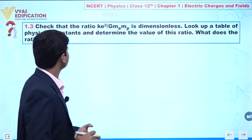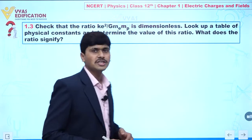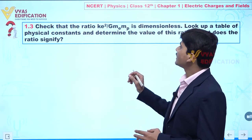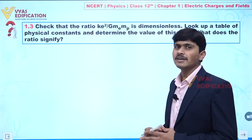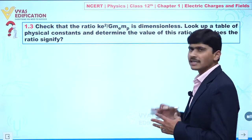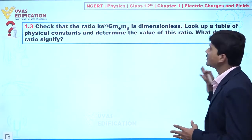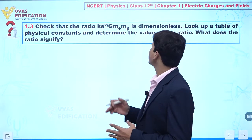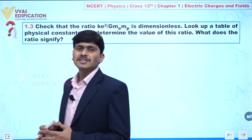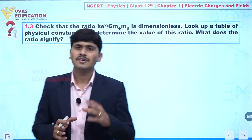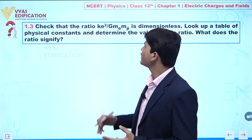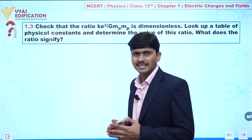We are going to discuss question number 1.3. In this question, we have to check that the ratio ke² divided by G·me·mp is dimensionless. We look up the table of physical constants and determine the value of this ratio and what it signifies. First, we have to prove that this ratio is dimensionless.